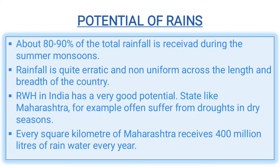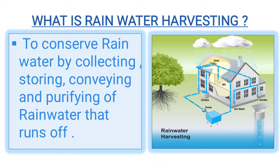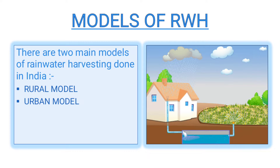Hence, if properly implemented and utilized in the form of rainwater harvesting in India, it is an easy solution to drought problems. Rainwater harvesting is a simple process or technology to conserve rainwater by collecting, storing, conveying, and purifying the runoff from rooftops, parks, roads, open ground, etc., for later use.